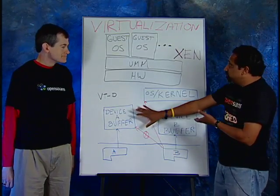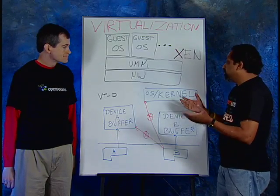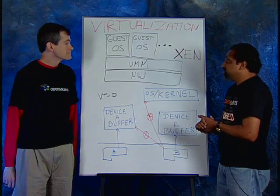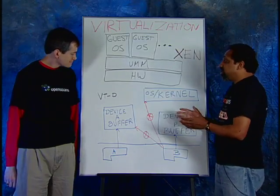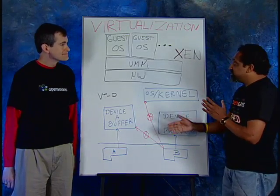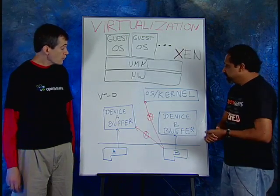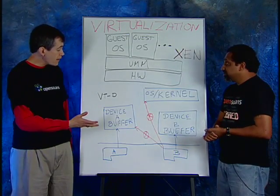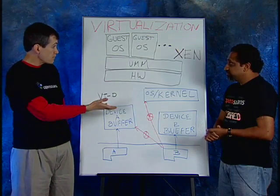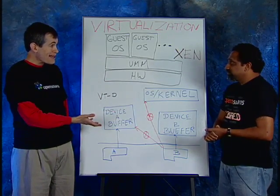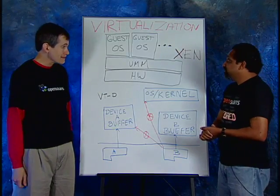So when a device attempts to corrupt some of the main memory's data structures, we basically flag the error and tell the operating system: there's an errant device in your system, thereby you can stop those accesses upfront and have a much more secure operating environment. So we're taking the best of what we've done with Xen, which we've been working with for years, as well as the best of what we're doing with OpenSolaris, and the combination is really powerful.